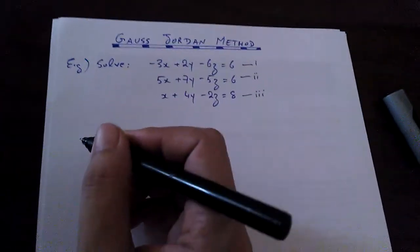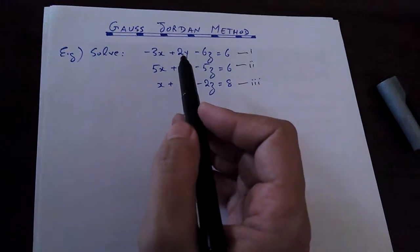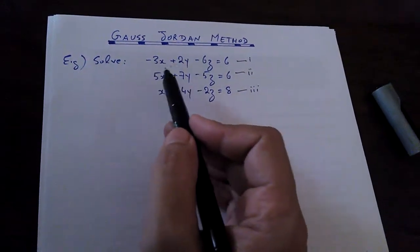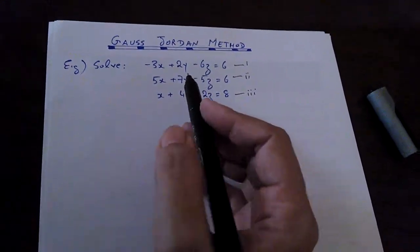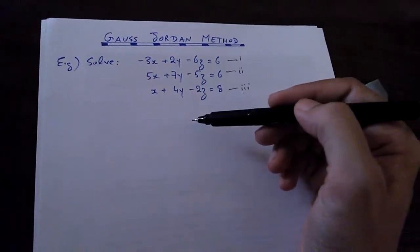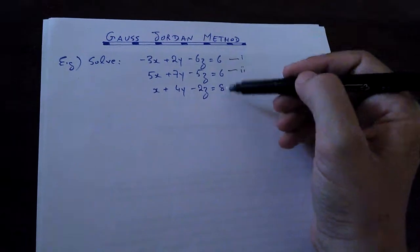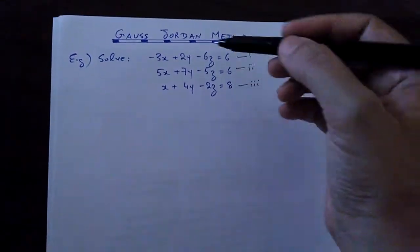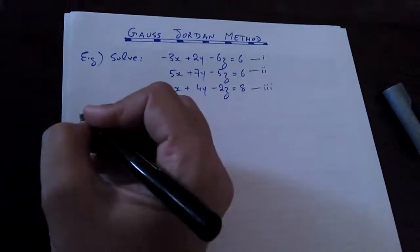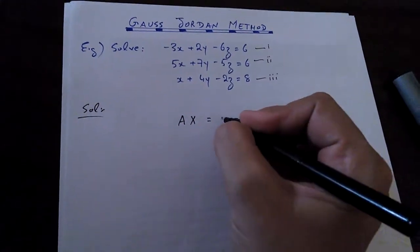As you know, we have to make three matrices here. One matrix is formed by compiling all the coefficients of the variables from all three equations. Another column matrix is formed by writing the variables in a vertical order, and the third matrix is formed by writing the right-hand side values. We call this matrix B, matrix X as the variable matrix, and the coefficient matrix we represent by A, giving us the format AX equals B.